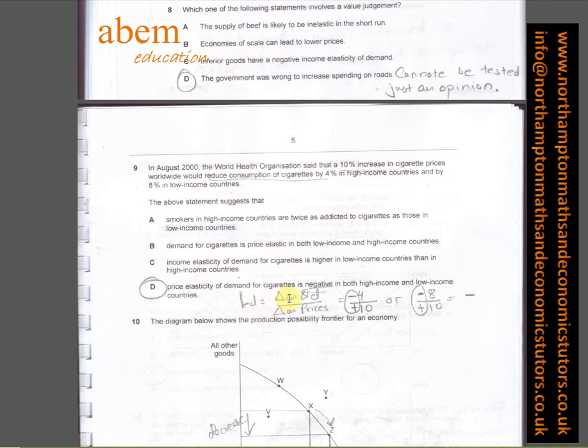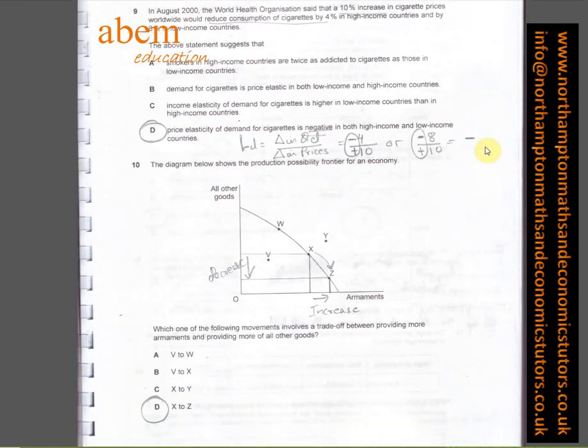To prove that, I've put down the formula for PED, which is equal to percentage change in quantity demanded over percentage change in prices. So change in quantity demanded is minus 4% divided by increase in prices plus 10. Minus divided by plus equals minus. The negative is normally ignored when we talk about the law of demand.